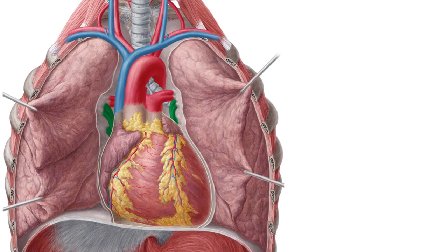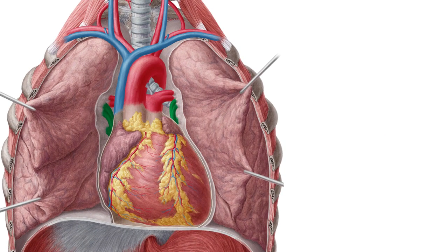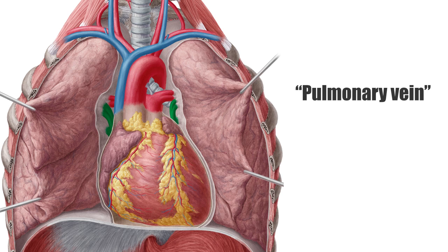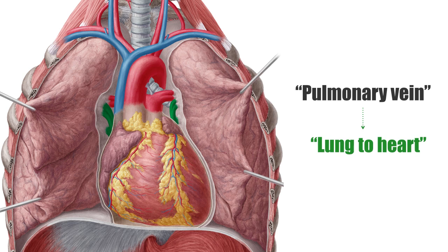Here's one way to remember: all veins carry blood to the heart and all arteries carry blood away from the heart. It's the same here, except that the pulmonary veins carry blood to the heart from the lungs, so it's oxygenated. When you hear the term pulmonary vein, think of it as self-describing — think lung to heart, and that should help jog the memory.